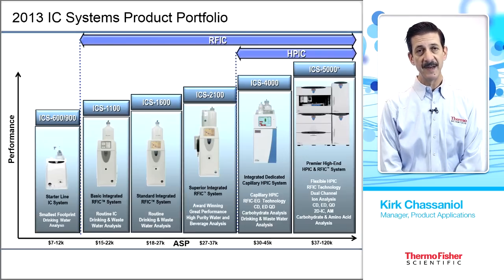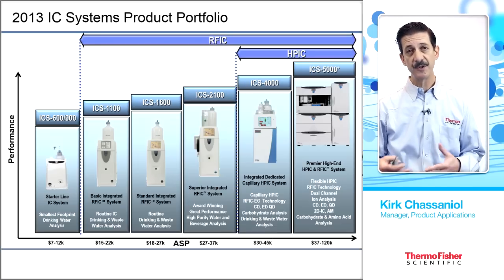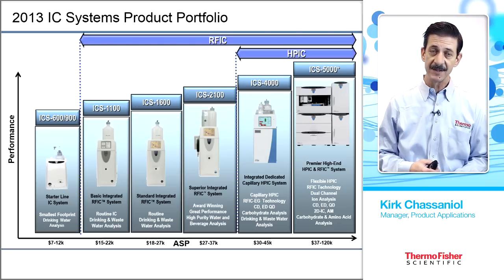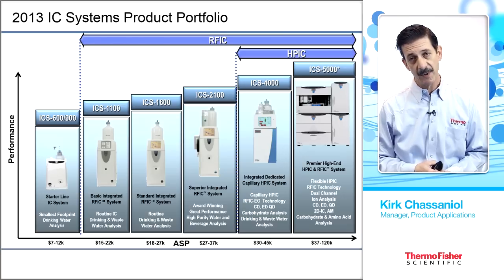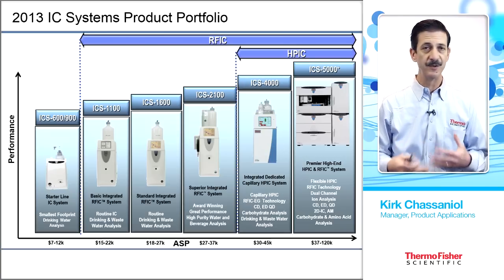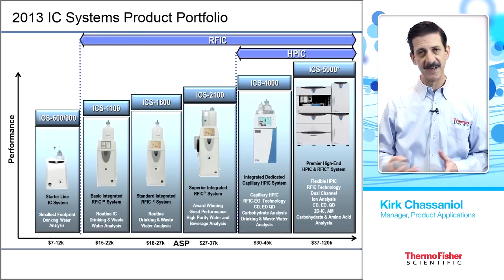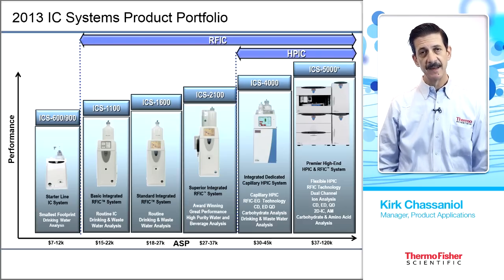This combustion IC sample preparation technique can be interfaced with virtually any Thermo Scientific ICS system — from the flagship ICS-5000+ all the way down to the starter ICS-900. The ICS-2100 is most commonly paired with combustion sample preparation because it is user-friendly, reagent-free, low maintenance, and supports gradient elution. It can be interfaced with both standard and capillary flows across the whole product line.